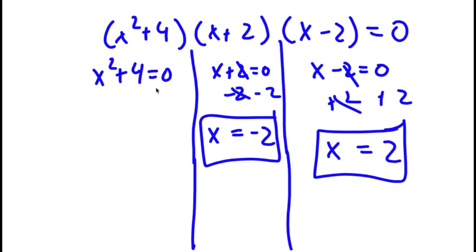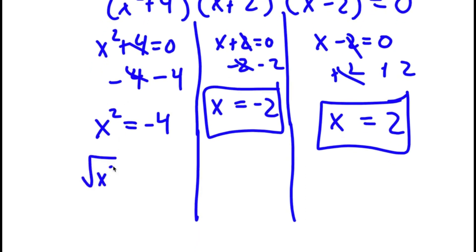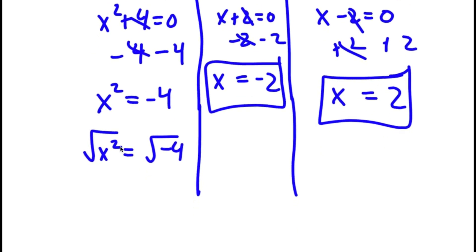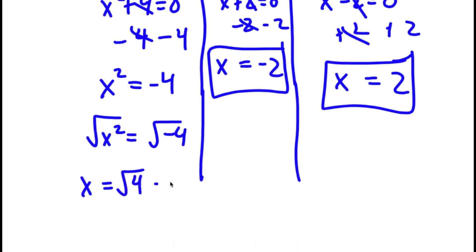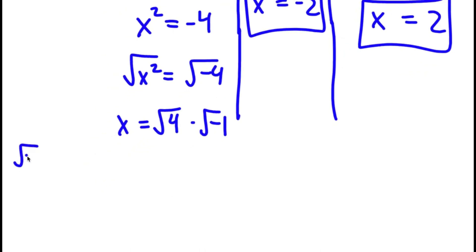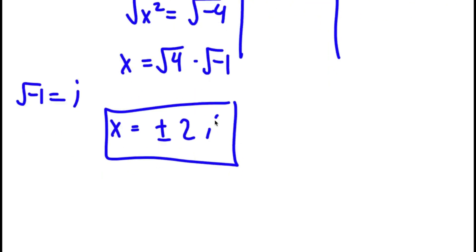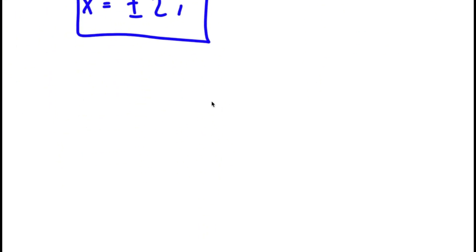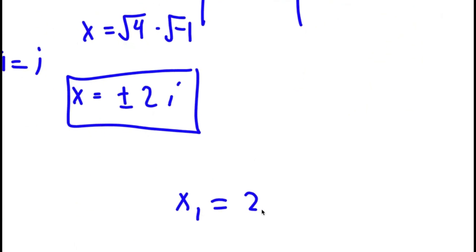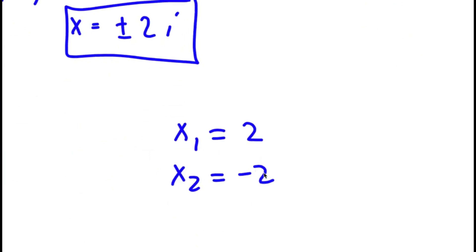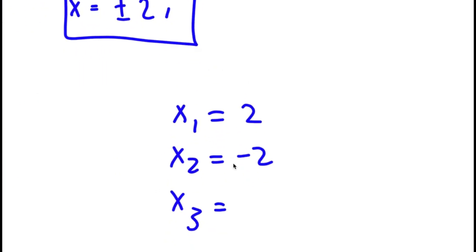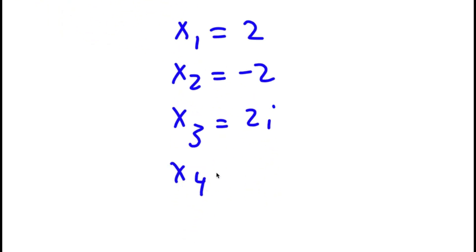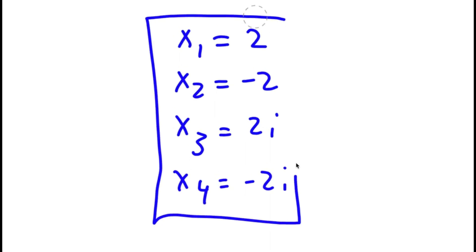Finally, for x squared plus 4 equals 0, subtracting 4 gives x squared equals negative 4. Taking the square root, x equals the square root of negative 4, which is the square root of 4 times the square root of negative 1. Since the square root of negative 1 is i, x equals positive or negative 2i. So all four solutions are x equals 2, x equals negative 2, x equals positive 2i, and x equals negative 2i.